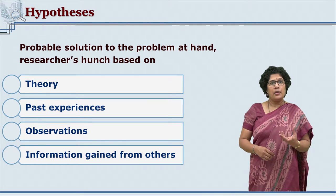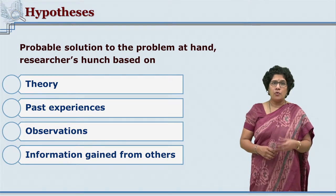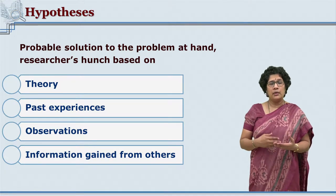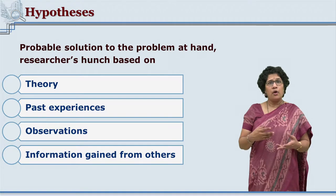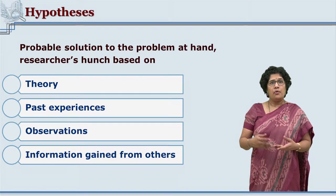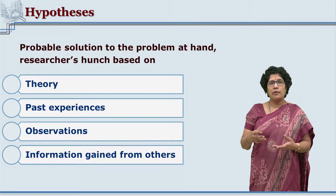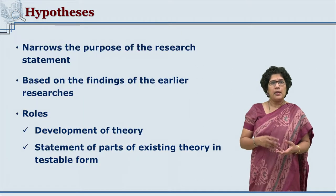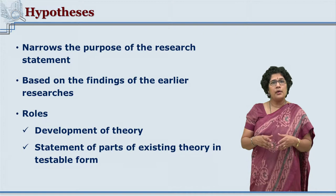In research, we say there is a problem at hand that we study. The hypothesis is the tentative solution of that problem — it is also the researcher's hunch about the tentative solution. The basis of this tentative solution could be previous theory, earlier researches, or the researcher's own experiences. On the basis of all these, the researcher writes down the hypothesis, which helps narrow down the research further.